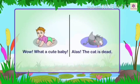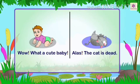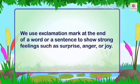Next, the exclamation mark. For example: 'Wow! What a cute baby!' and 'Alas! The cat is dead!' — here we have used an exclamation mark after 'wow' and after 'alas.' We use an exclamation mark at the end of a word or a sentence to show strong feelings such as surprise, anger, or joy.